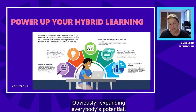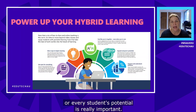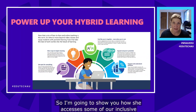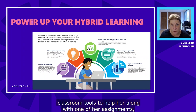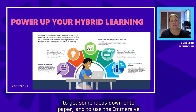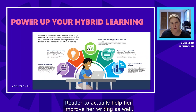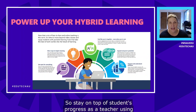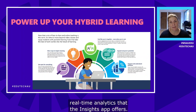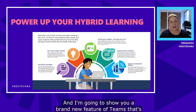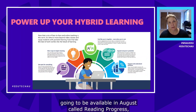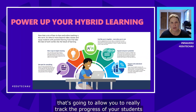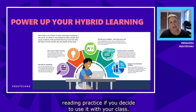The fourth pillar is expanding every student's potential. Molly has some learning difficulties, so I'll show you how she accesses our inclusive classroom tools to help with one of her assignments — getting ideas down onto paper and using the Immersive Reader to improve her writing. The fifth pillar is supporting and understanding students — staying on top of student progress using real-time analytics from the Insights app. I'll also show you a brand new feature called Reading Progress, coming in August, which will let you track students' reading practice.